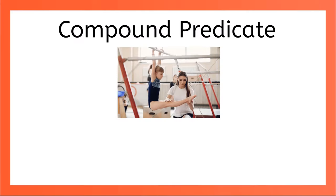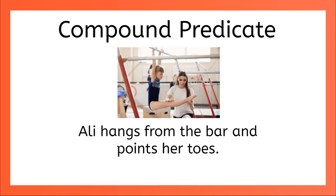Let's see if you can spot the compound predicate in this sentence: Allie hangs from the bar and points her toes. Our subject is Allie, and she hangs from the bar and points her toes. Those two predicates are joined together by the coordinating conjunction AND.